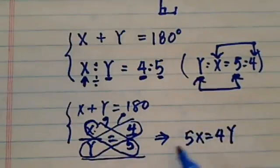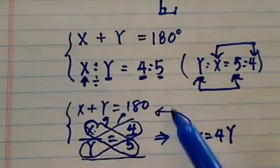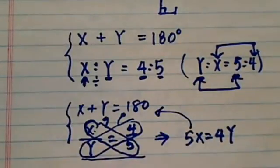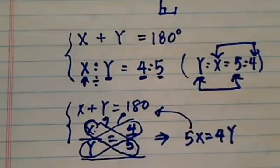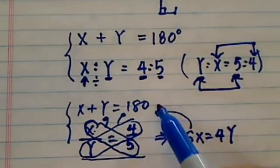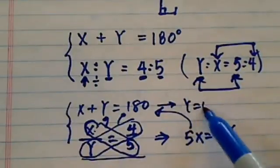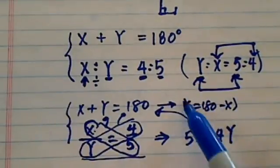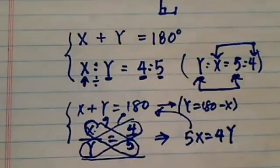From here, you can substitute it back in there and solve for it. So let's say 5x equal to 4y, what's y? From here, you can say y is equal to 180 minus x. So y is 180 minus x. Let's multiply it out. So 5x is equal to, let's say 180 times 4, 720. So 720 minus 4x.